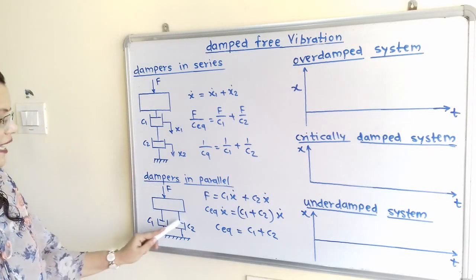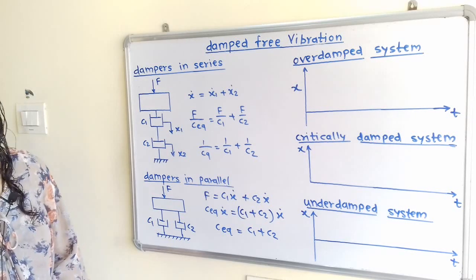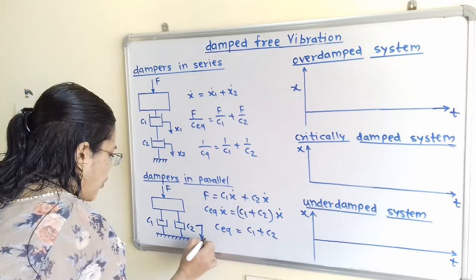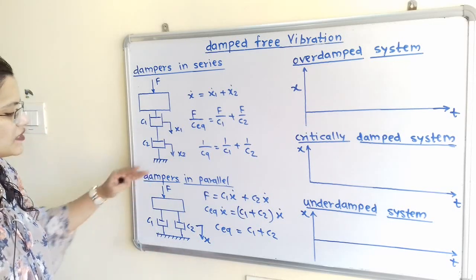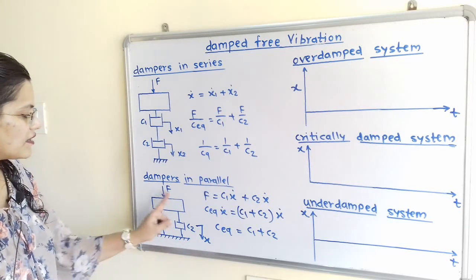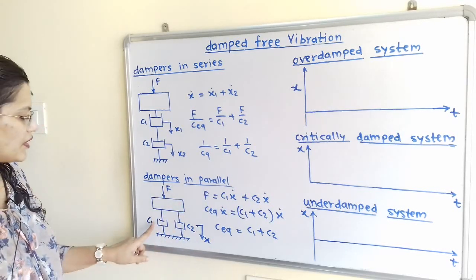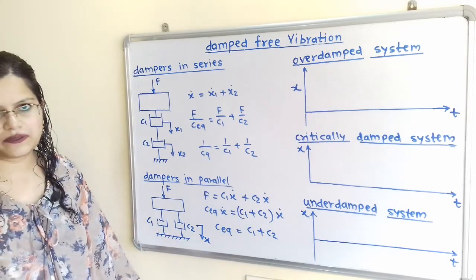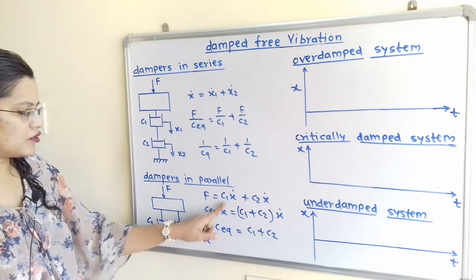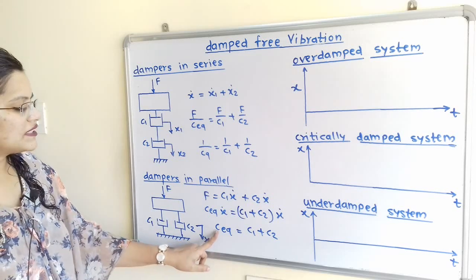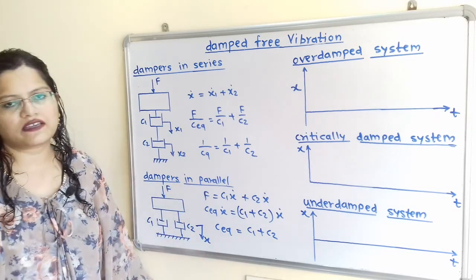When dampers C1 and C2 are connected in parallel, the displacement is common for the whole system — C1 has displacement X, C2 has displacement X. The damping force F = C1·X dot + C2·X dot. Writing F = Ceq·X dot = (C1 + C2)·X dot, and cancelling X dot on both sides gives Ceq = C1 + C2. This is the formula for equivalent damping coefficient when dampers are in parallel.